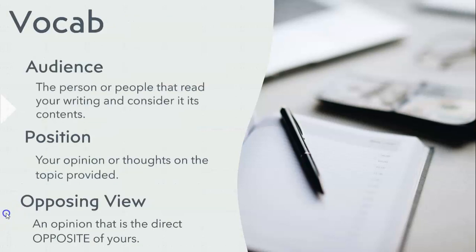Some quick vocab review for us. We are talking about audience, position, and opposing view. The audience is the person or people that will read your writing and that the writing is directed to. Your position is your opinion or thoughts on the topic provided. And the opposing view is an opinion that is in direct opposite of your position.